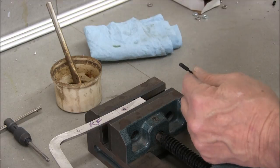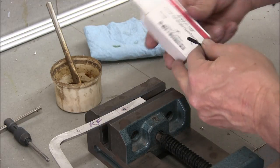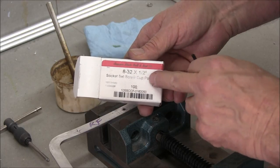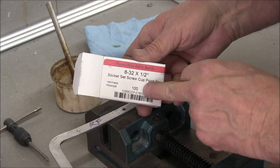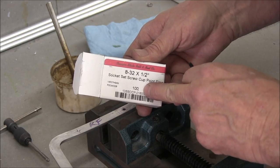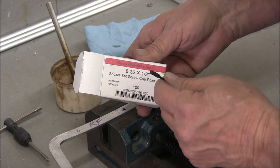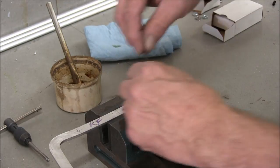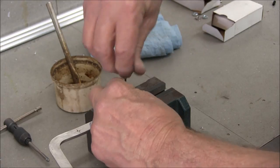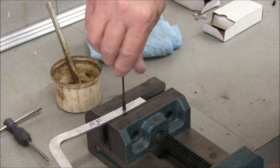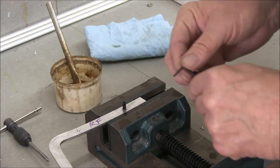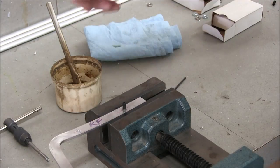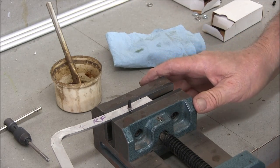I got some shorter set screws, these 8-32 by half. I got a hundred of them for four dollars, a hundred of them. At Ace they sell each one for 50 cents. So this is a copper state nut and bolt, it's worth it to go to the nut and bolt company. And then this of course threads right in. Very nice, works out beautiful.